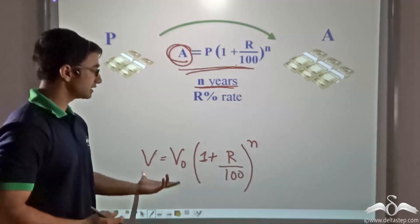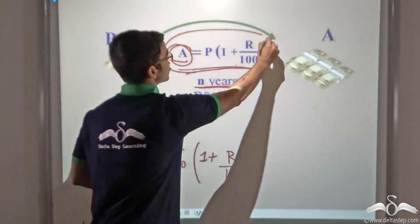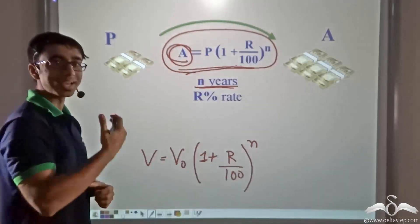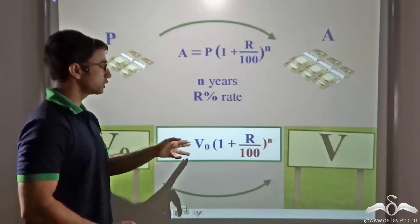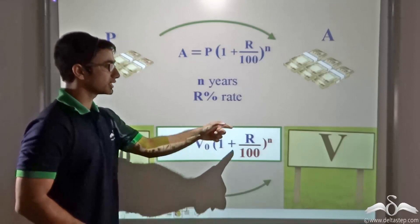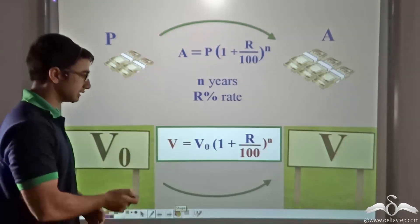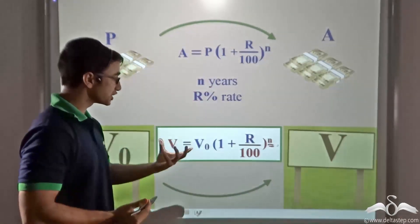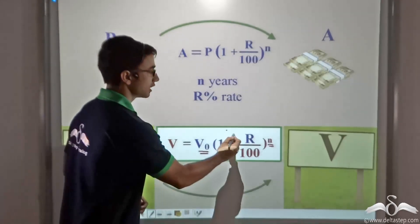Now as you can see this formula is quite similar to the formula for amount when this particular sum of money is compounded annually. Thus V equal to V0 multiplied by 1 plus R by 100 to the power of N will give me the value of land after N years, provided the initial value is V0 and it grows at a rate of R percent.